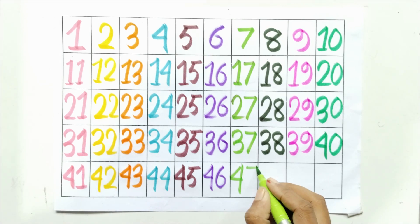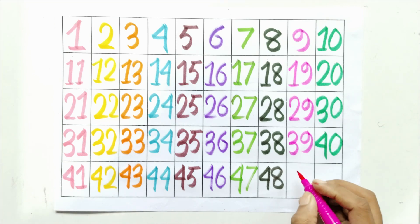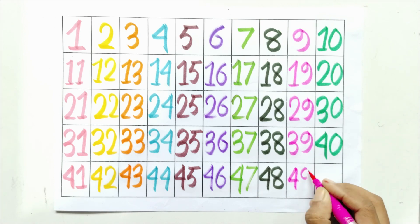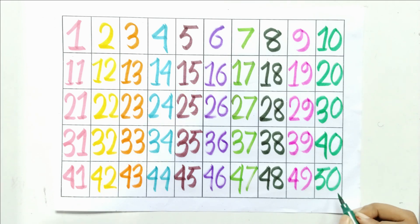Four and seven, forty-seven. Four and eight, forty-eight. Four and nine, forty-nine. Five and zero, fifty.